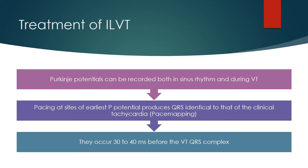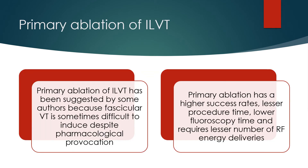Purkinje potentials occur 30-40 ms before the VT QRS complex. Pacing at sites of earliest P potential produces a QRS identical to that of the clinical tachycardia. Primary ablation of ILVT has been suggested by some authors because fascicular VT is sometimes difficult to induce despite pharmacological provocation. Primary ablation has a higher success rate, lesser procedure time, lower fluoroscopy time, and requires fewer RF energy deliveries.